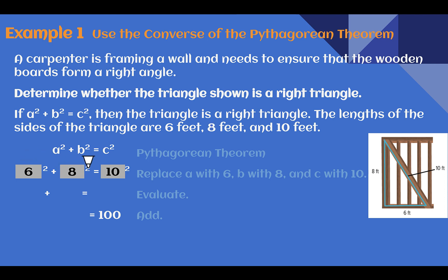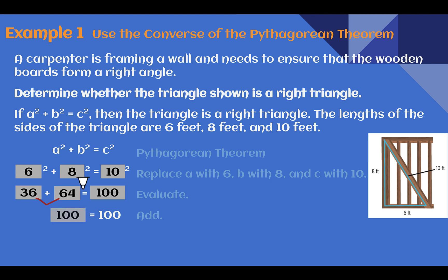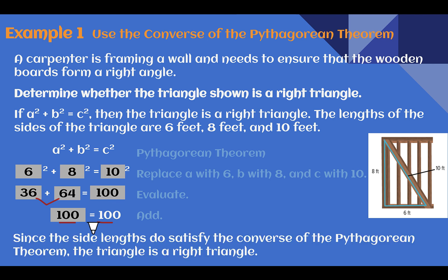Is 6 squared plus 8 squared equal to 10 squared? 6 squared is 36, 8 squared is 64, and 10 squared is 100. If we add the two leg squares together, do we get the hypotenuse squared? 36 plus 64 is 100. Since we got the same thing and showed that the Pythagorean Theorem worked, this satisfies the Converse of the Pythagorean Theorem, and therefore the triangle is a right triangle.